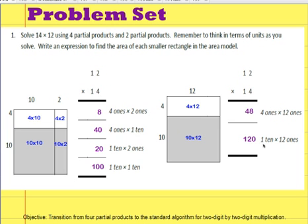Now I can add these things up: 8 plus 0 is 8, 4 plus 2 is 6, 1 plus 0 is 1, so it's 168.